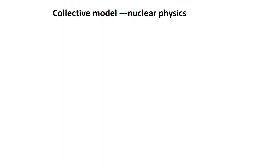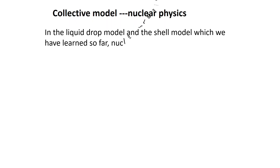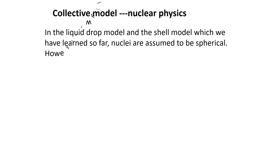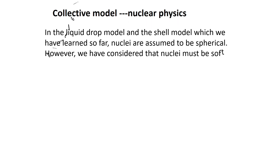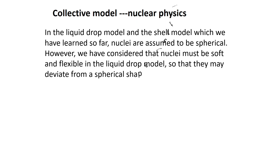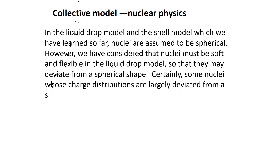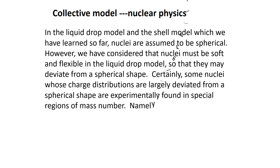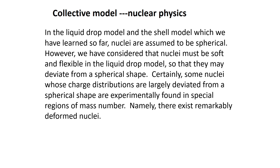Today we are going to discuss the collective model. In the liquid drop model and the shell model which we have learned, nuclei are assumed to be spherical. However, we have considered that nuclei must be soft and flexible in the liquid drop model so that they may deviate from a spherical shape. Indeed, some nuclei whose charge distributions are largely deviated from a spherical shape are experimentally found in special regions of mass number — there exist remarkably deformed nuclei.